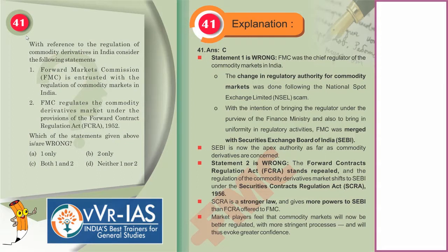Now let us take up the 41st question with reference to regulation of commodity derivatives in India. Consider the following statements: the Forward Markets Commission is entrusted with the regulation of commodity markets in India; and FMC regulates the commodity derivatives market under the provisions of the Forward Contract Regulation Act of 1952. Which of the above statements is/are correct? To attempt this question, we need to understand what is meant by a commodity derivative.